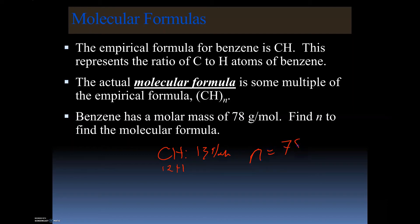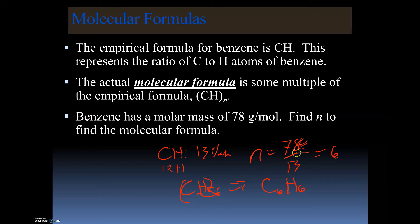We know the empirical formula's molar mass: carbon is 12 and hydrogen is 1, so CH = 13 grams per mole. To find n, we take 78 ÷ 13 = 6. We take the empirical formula (CH) and distribute the 6 through, giving C6H6. The 78 was given, and 13 was calculated from the empirical formula's molar mass.